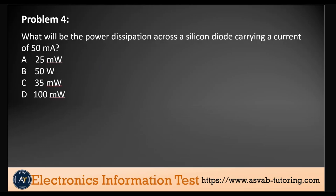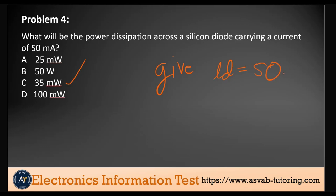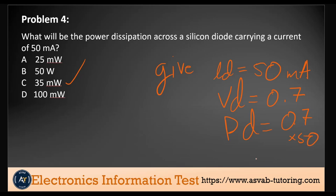Problem four. What will be the power dissipation across a silicon diode carrying a current of 50 mA? The answer here is 35 mW. The given current ID is about 50 mA. The VD would be 0.7. The power dissipation here would be 0.7 times 50, giving us 35 mW.